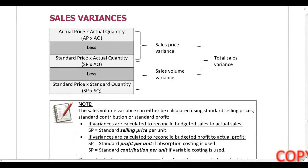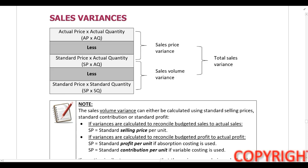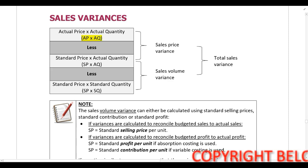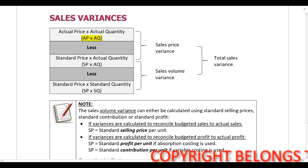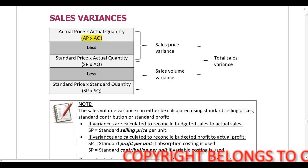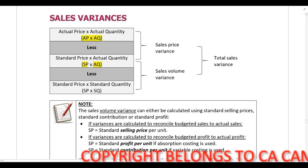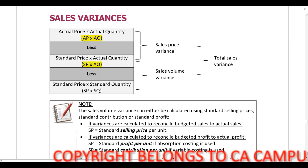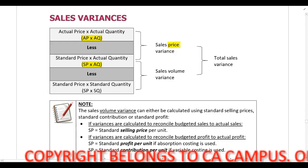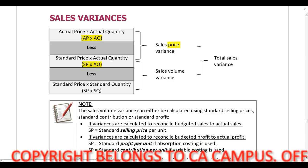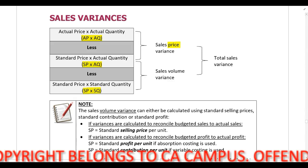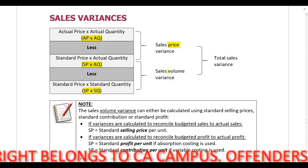Next we are going to look at sales variances. You always start with the actual information: the actual price multiplied by the actual quantity. Remember we only change one thing at a time. Keep the quantity the same and just change the price, and that will leave you with the sales price variance. Then if you keep the price the same and just change the quantity, that will leave you with the sales volume variance.